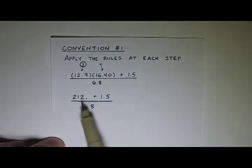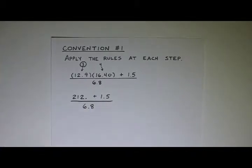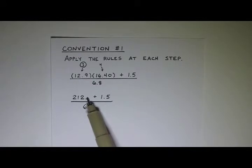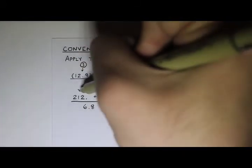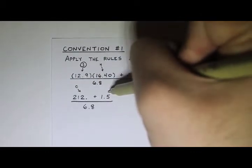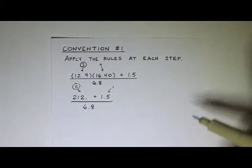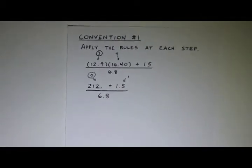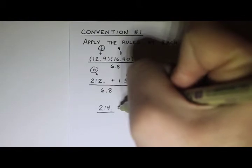Next thing we would do is this addition right here. And remember when we add or subtract, we count decimal places. So this has zero places after the decimal and that has one place, so zero wins. So when I do this calculation, I would get 214, with no places after the decimal point, divided by 6.8.